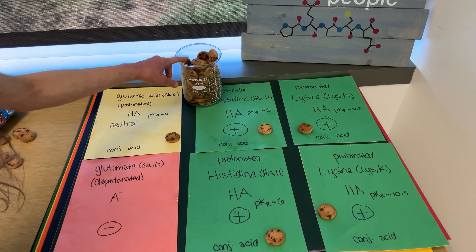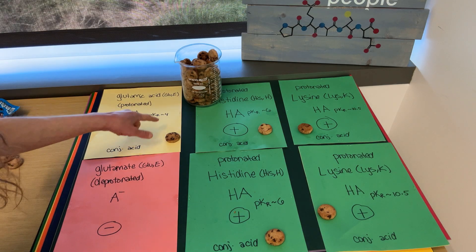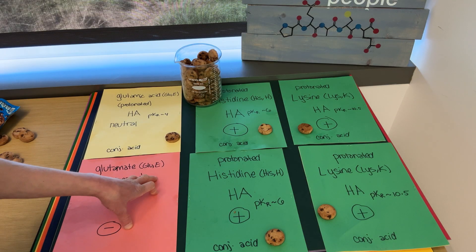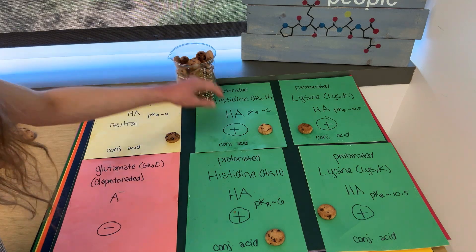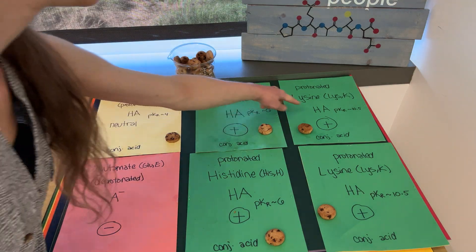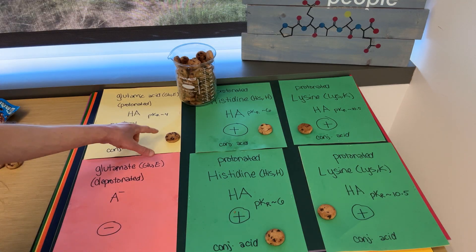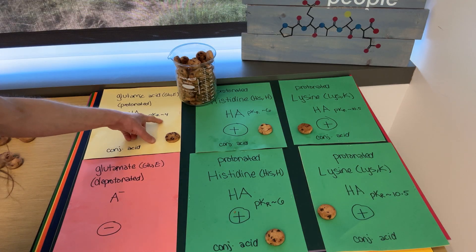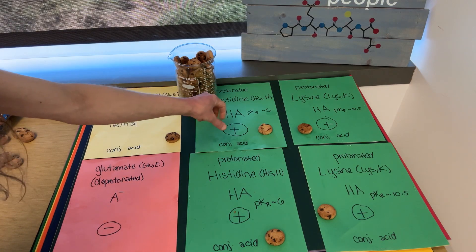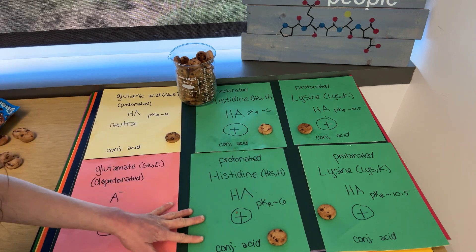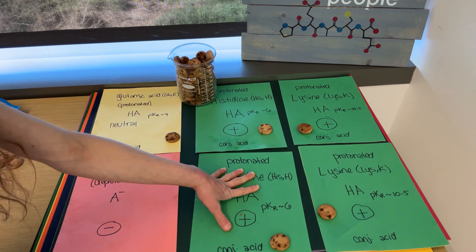When the pH is equal to the pKr, you're going to find it half of the time in the protonated form and half of it in the deprotonated form. Note, however, that the pKr of histidine is 6 and lysine is 10.5. If we were at a pH of 4, we would still have these be in their fully protonated form because we're below their pKa's.